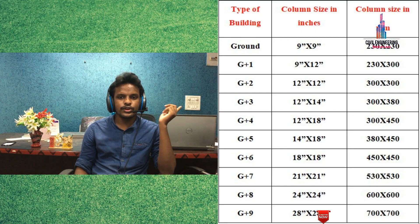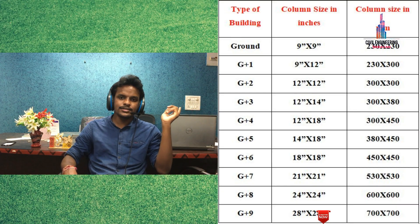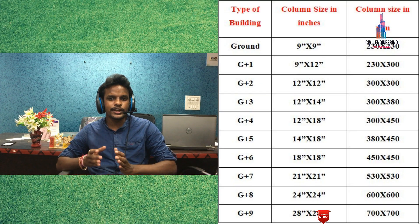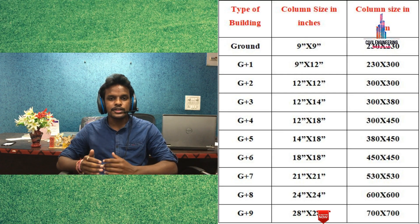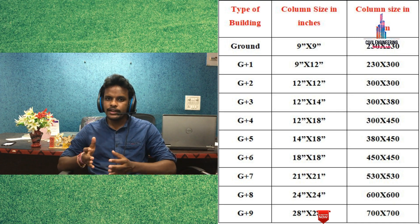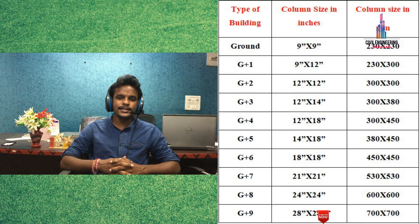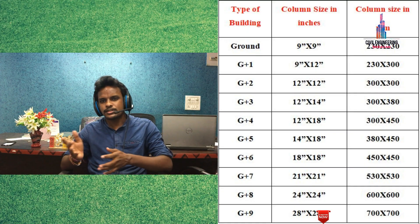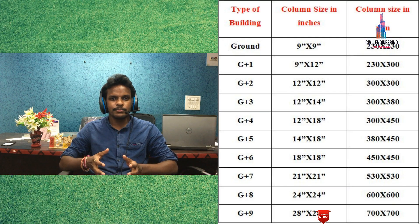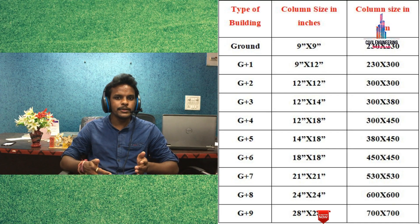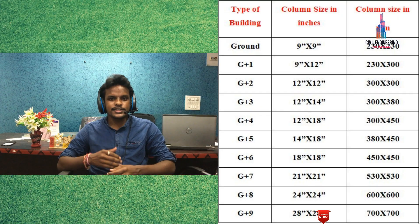For a ground story building, the column size is 9 inches cross 9 inches, approximately equal to 230 mm cross 230 mm. For a G+1 building, the column size should be 9 inches cross 12 inches (or 12 inches cross 9 inches), which is approximately equal to 230 mm cross 300 mm.